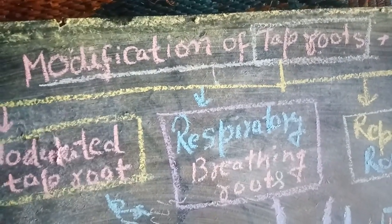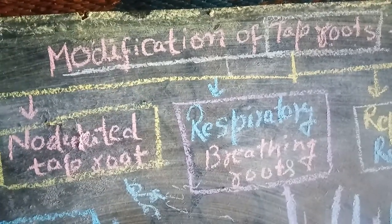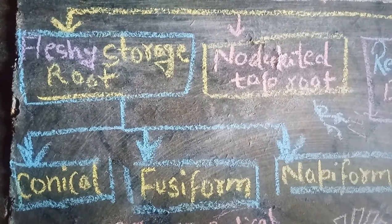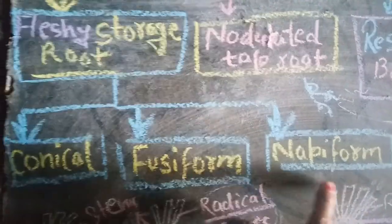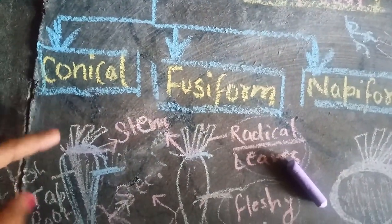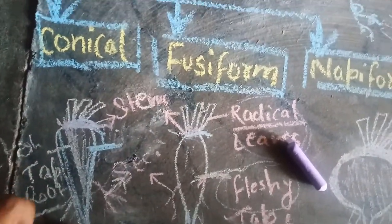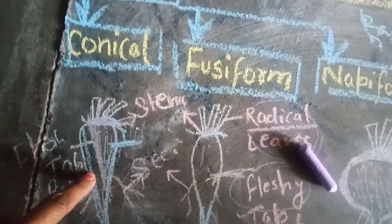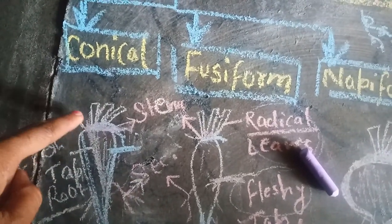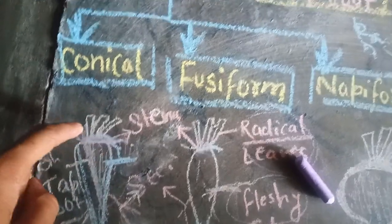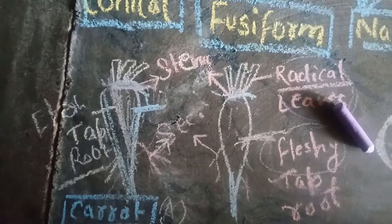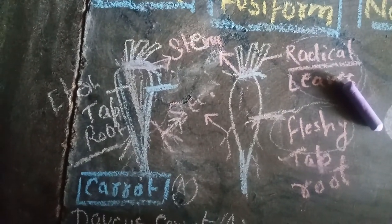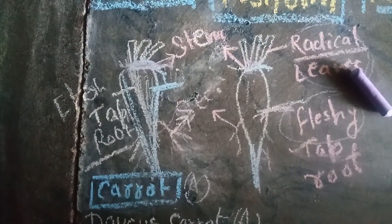Modification of tap root: the tap root are divided into five parts. First is fleshy storage root, and they are derived into three parts: first is conical, fusiform, and napiform. The conical root is conical in shape and the food is stored in the primary section. The leaf is reduced from the radical part. Example is carrot, and the scientific name is Daucus carota.